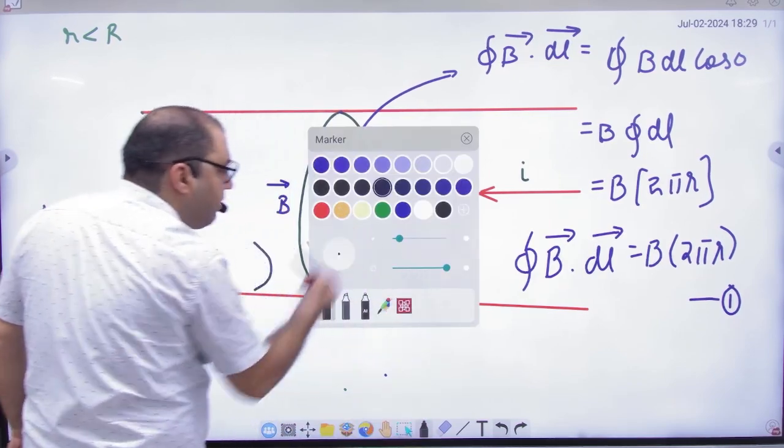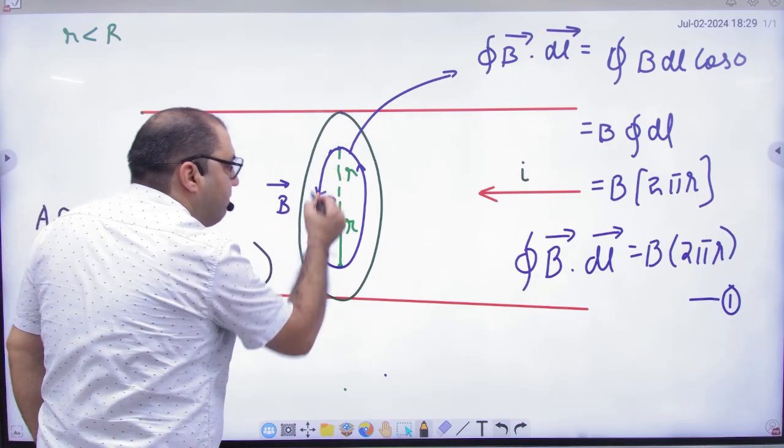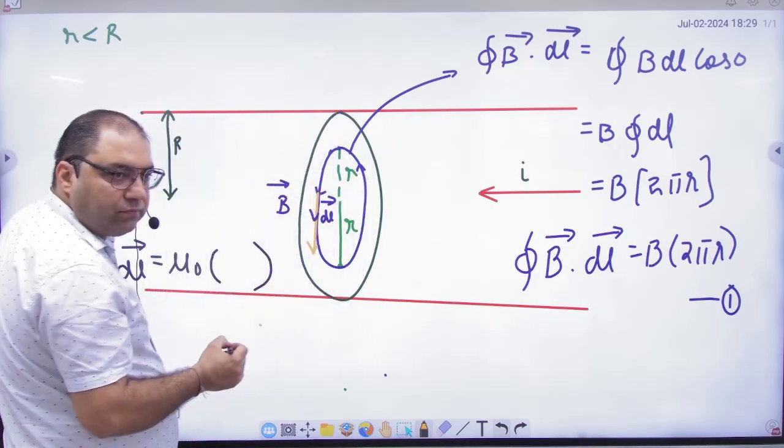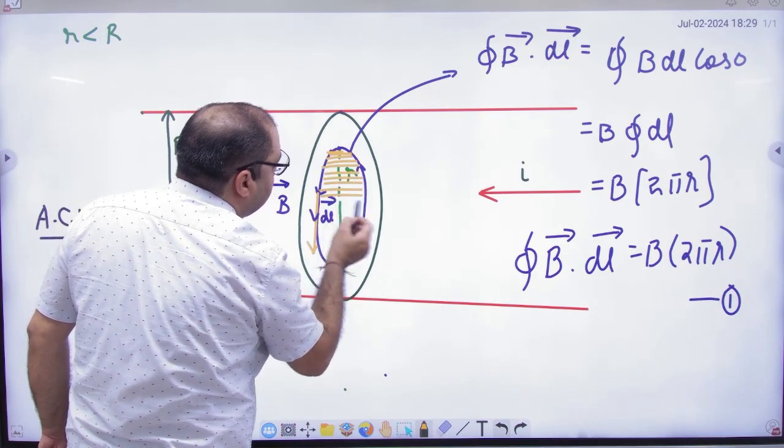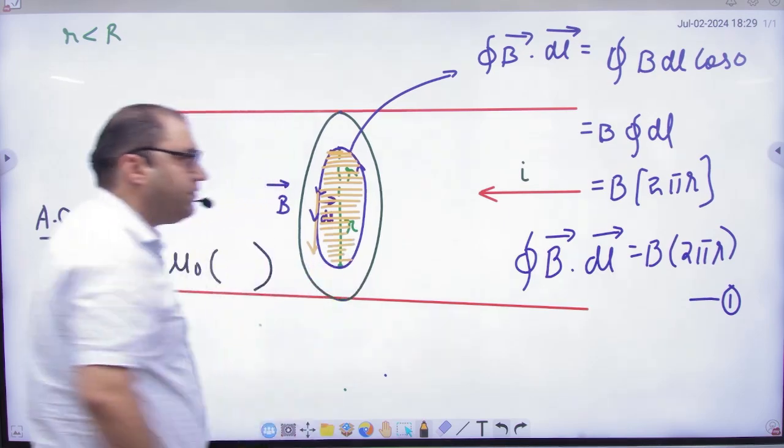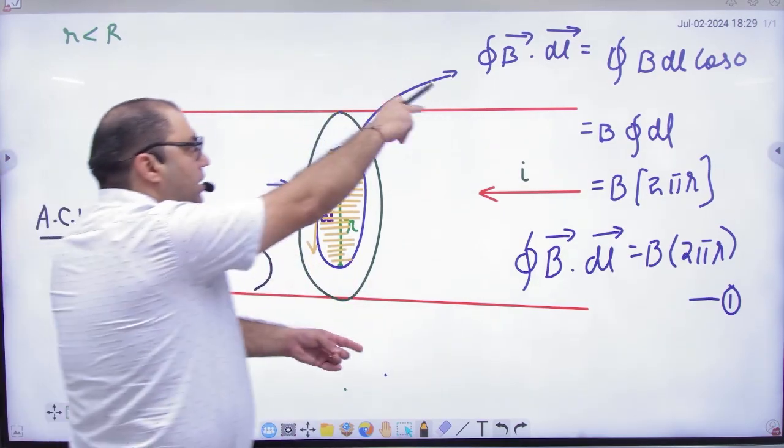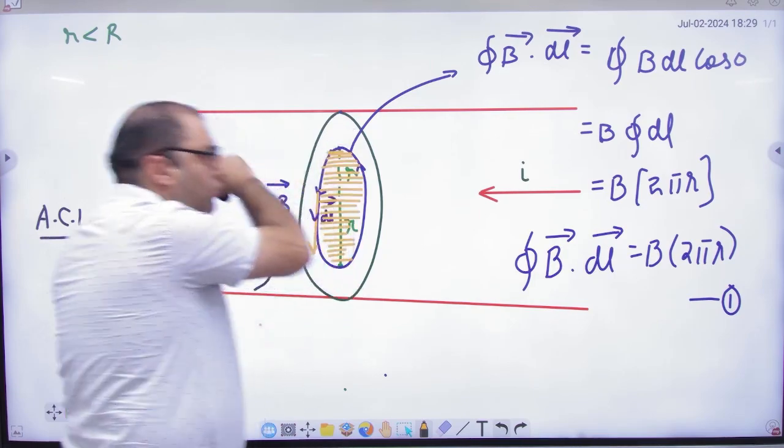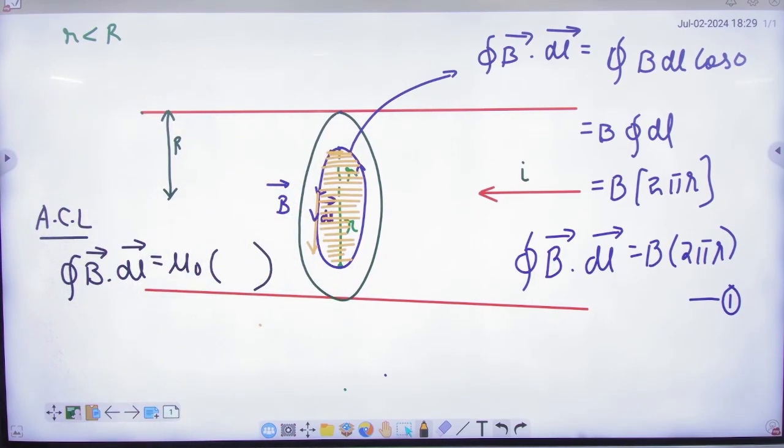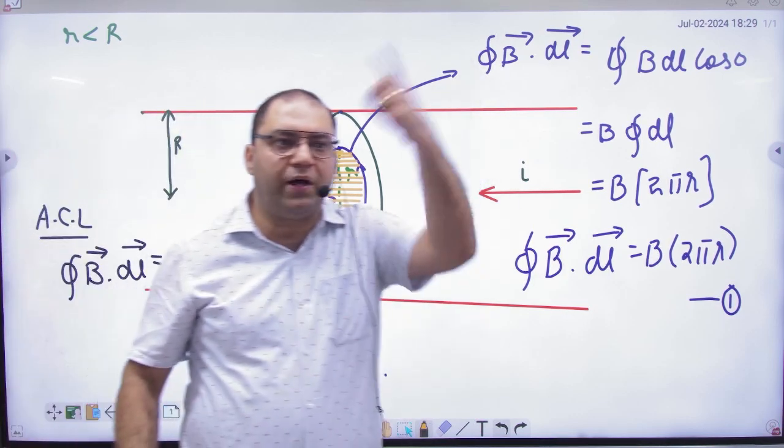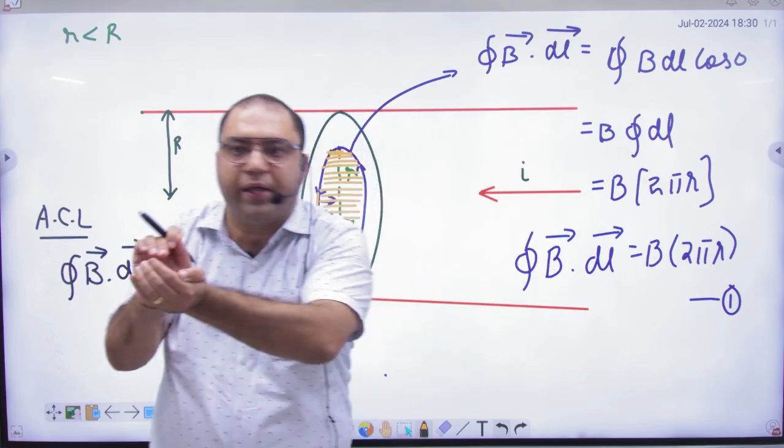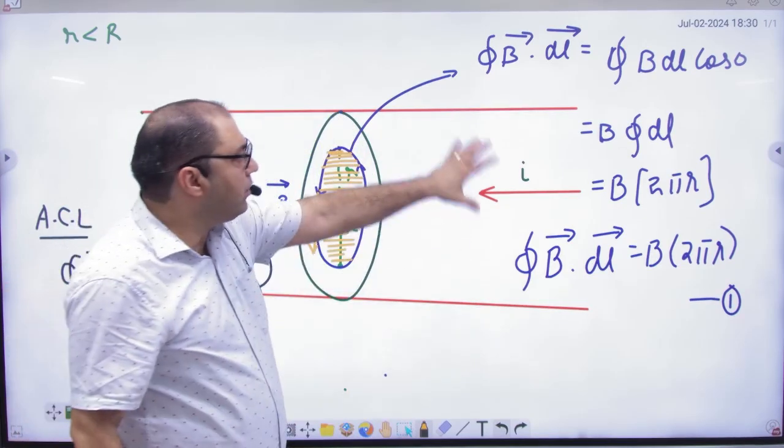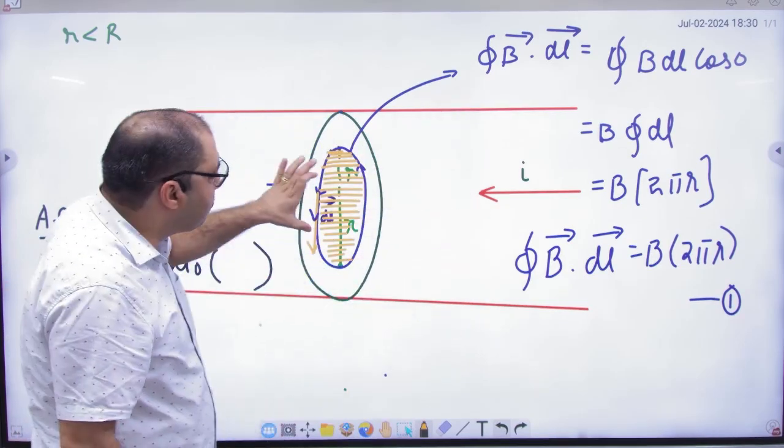According to Ampere's circuit law, ∮B·dl is also equal to μ₀ times i. Now which current? This is important. My closed path is the blue colored closed path. Which current do I take? I take the current which has passed through. What is the step clear? I will not get total current. I will get only the portion of current. Do you understand?